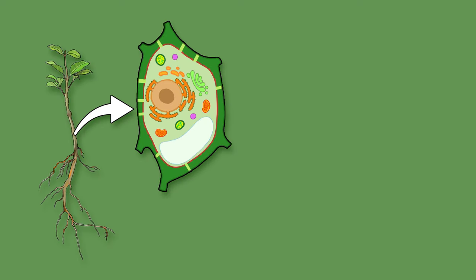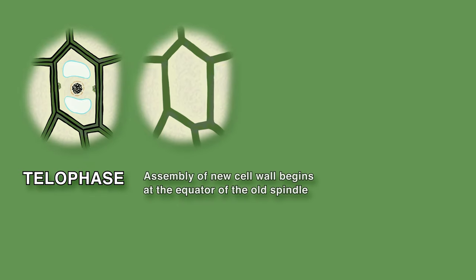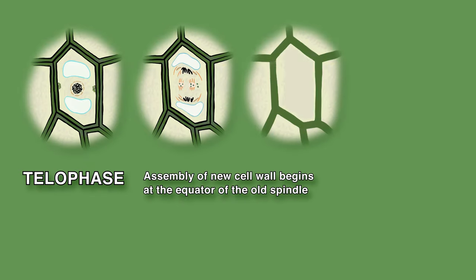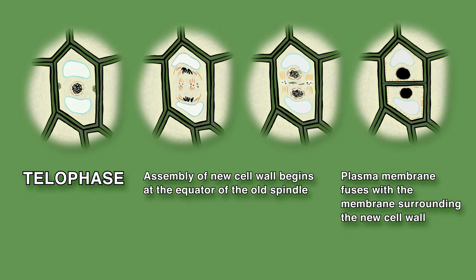Note that plant cells do things differently. Plant cells not only have a plasma membrane but also a cell wall. At the start of telophase, once chromosomes have been segregated, assembly of a new cell wall begins at the equator of the old spindle. Once the plasma membrane fuses with the membrane surrounding the new cell wall, the two daughter cells are separated.